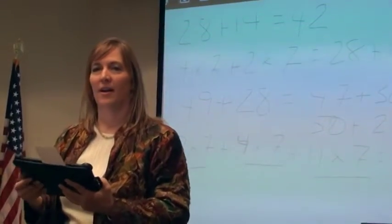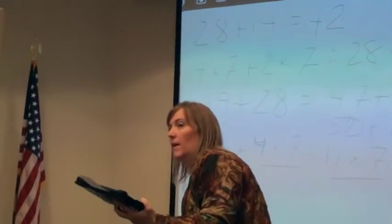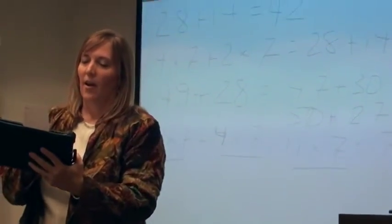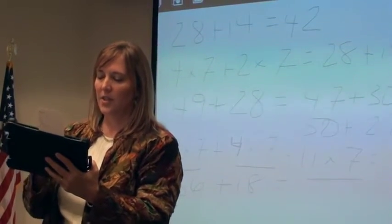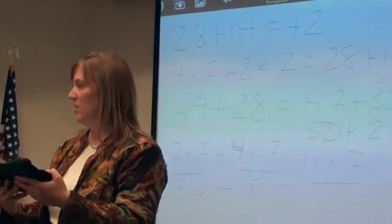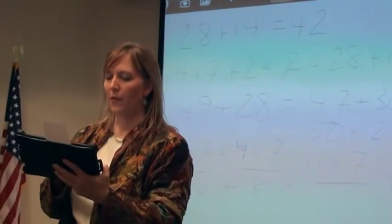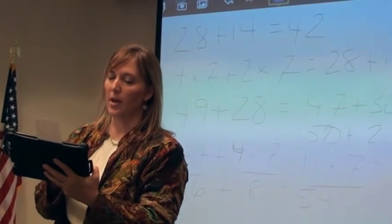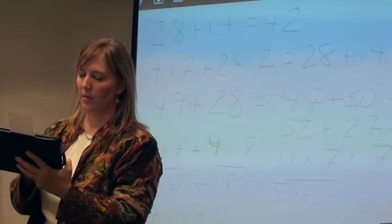What is 36 plus 18? I'd love to see a nice give and take strategy. I'd love to see an over strategy. Don't talk to the person next to you — let them think. What did y'all get? 54. The next problem in our string is four times nine plus two times nine. I have four nines and two nines — how many nines do I have? Six nines. What is six times nine? 54.